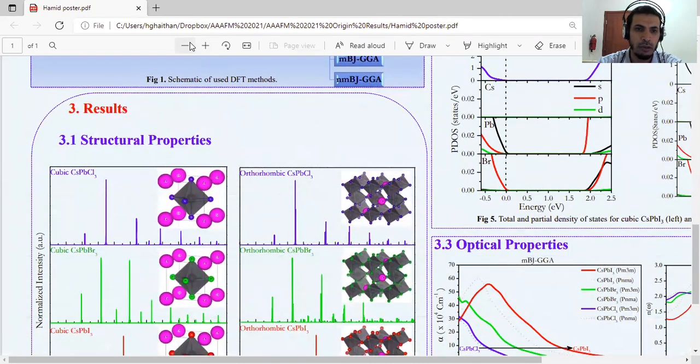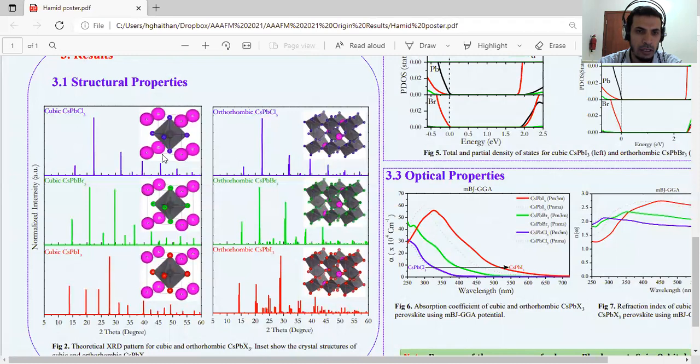The structural properties, our results show that this column represents the cubic cesium iodide, orthorhombic, bromide, and cesium chloride. We can see a gradual shift of the peaks to the right when we replace iodide with bromide and chloride. Also the same for orthorhombic iodide, bromide, and chloride.